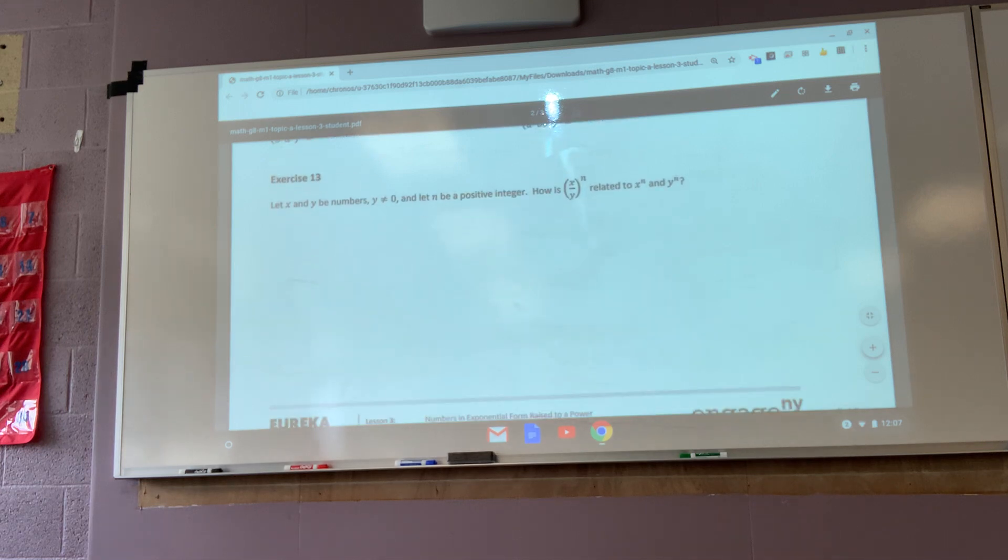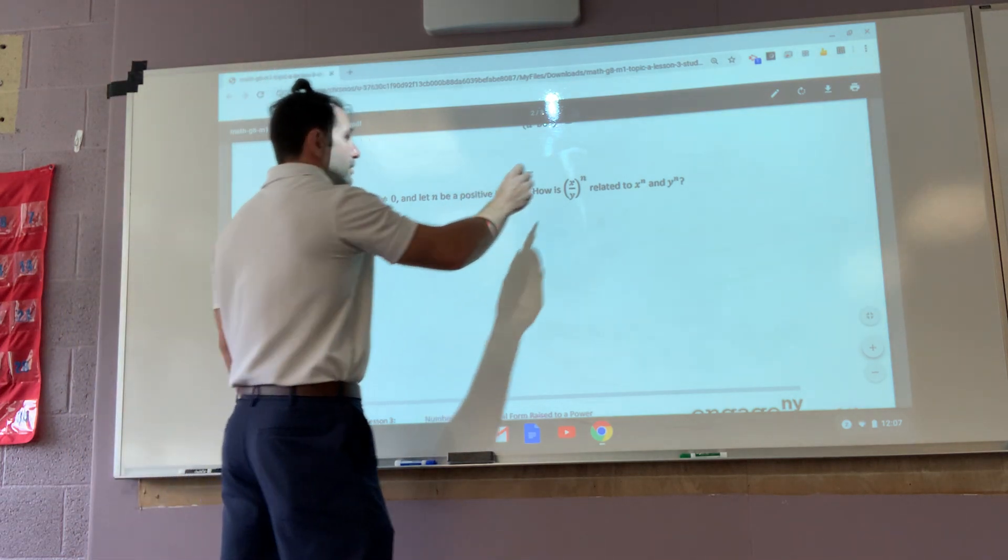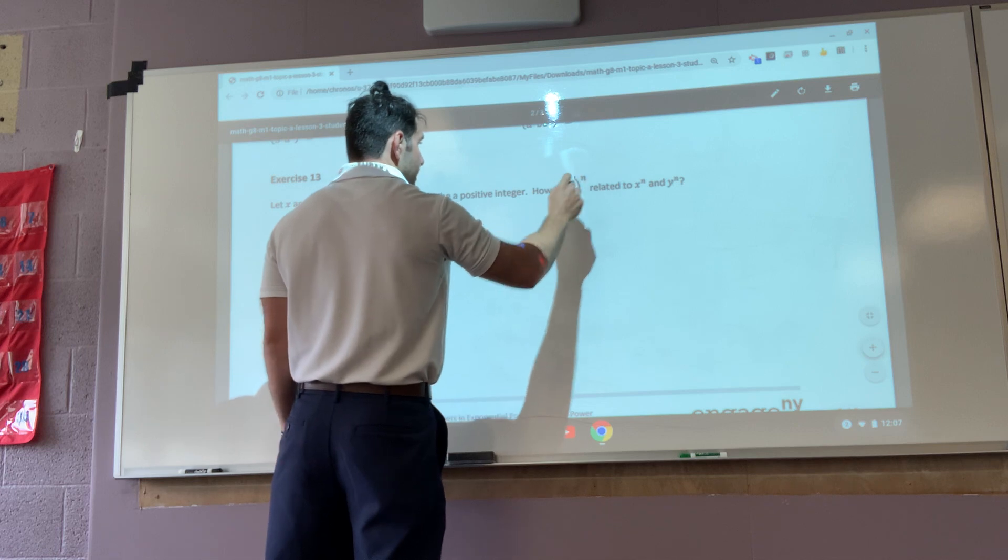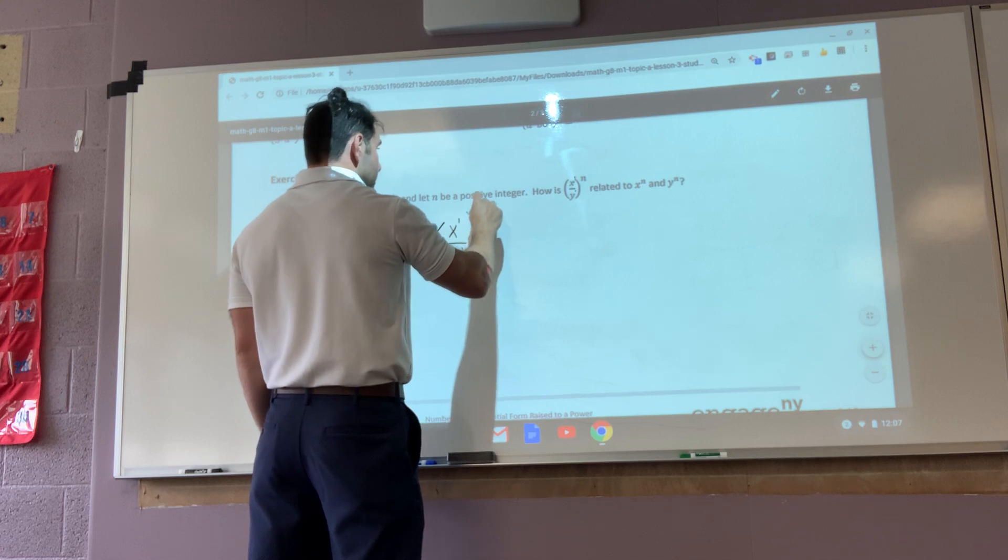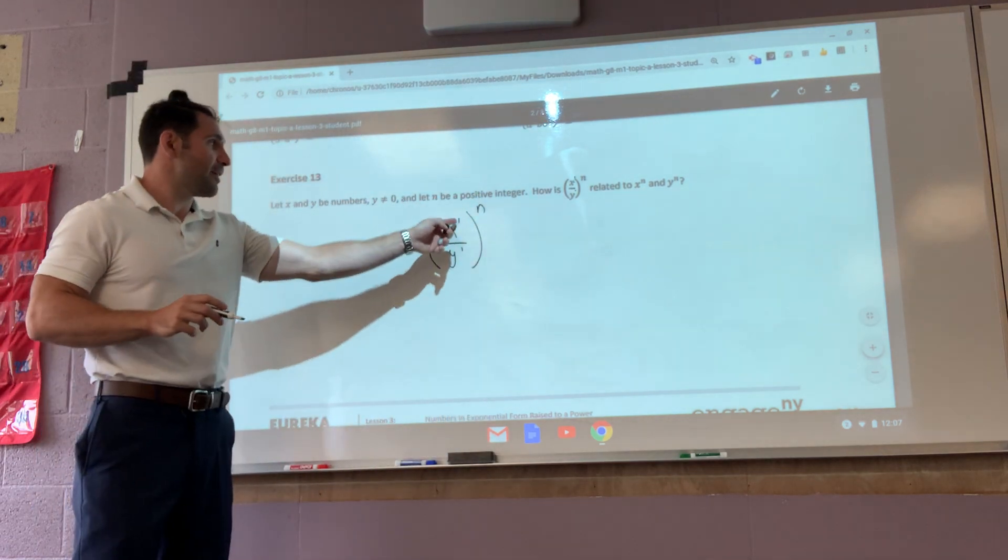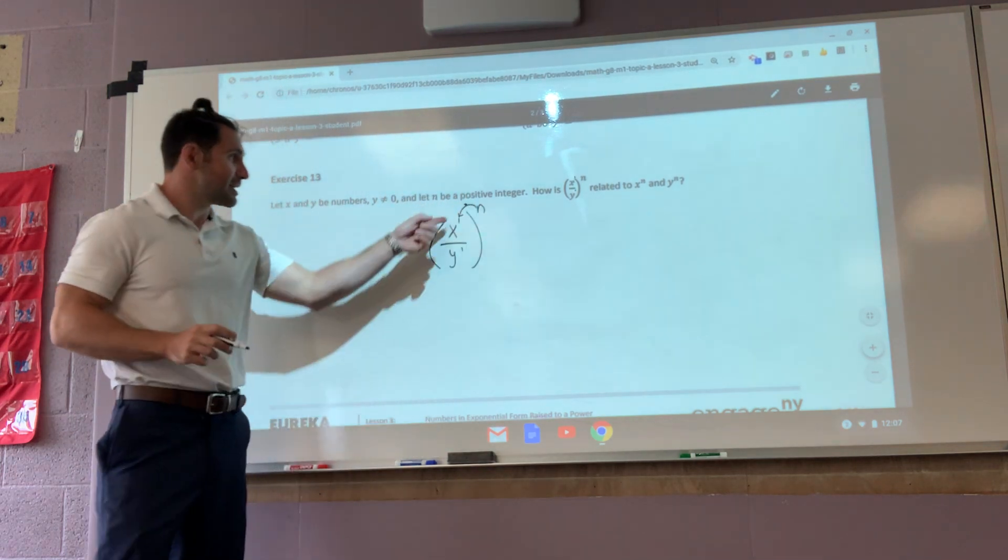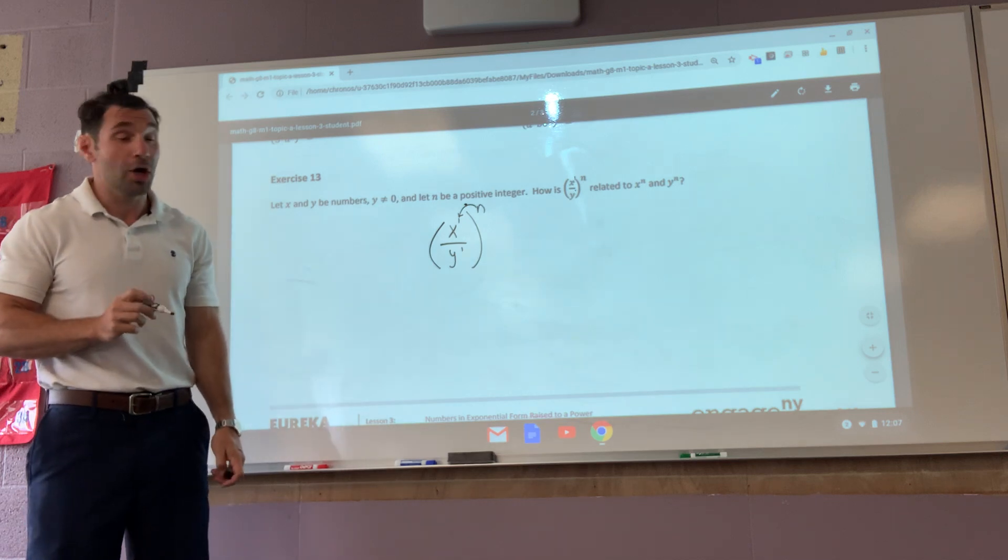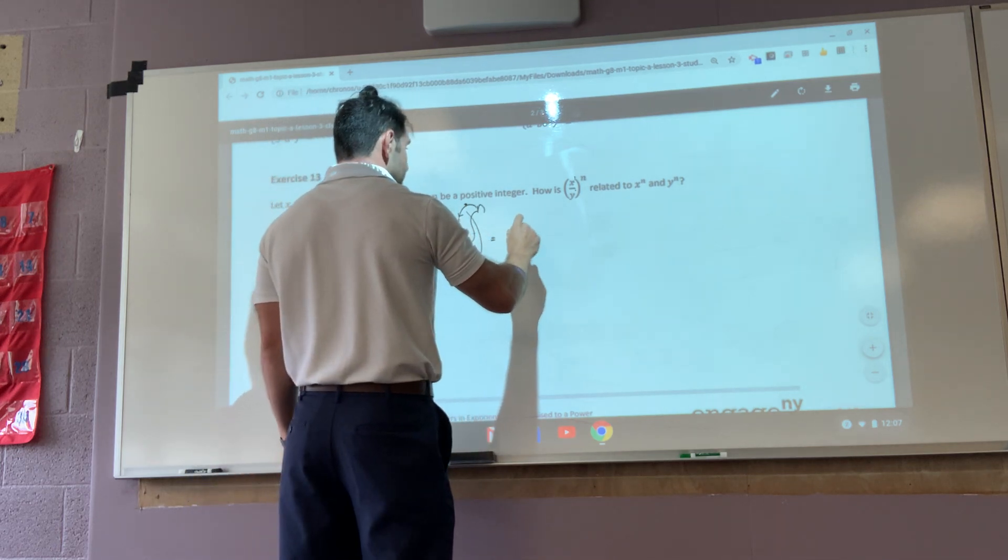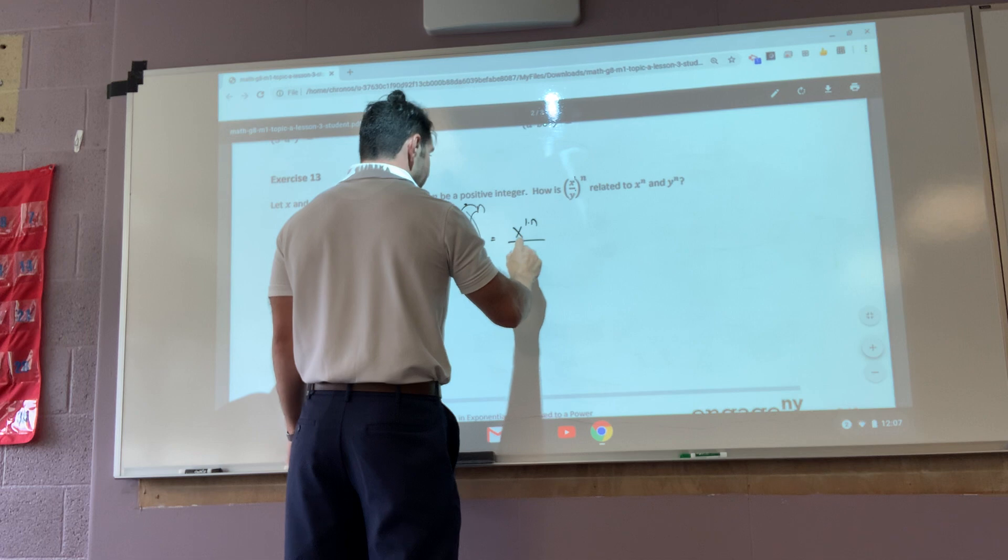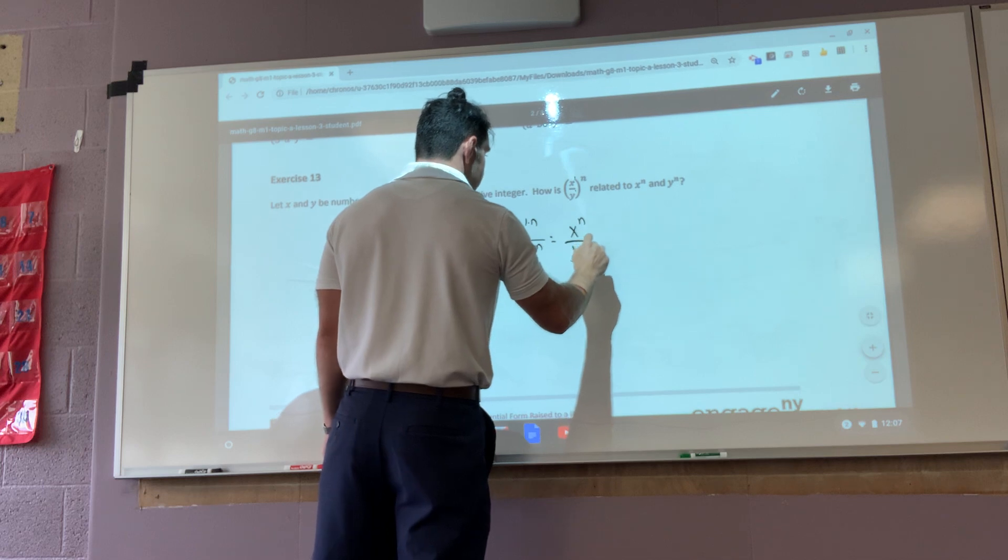Let x and y be numbers, let n be a positive integer. How is x divided by y related to x to the n, y to the n? So let's say I have this right here. So I'm going to make it a little bit bigger. I have x to the first power, y to the first power, all of that raised to the nth power. Well remember, if I have exponents raised to an exponent, that means I am distributing it to every exponent. Is this the only exponent I have? No. I also have exponents in the denominator. So that gives me x, one times n, divided by y, one times n. That's x to the one times n is n, y to the nth.